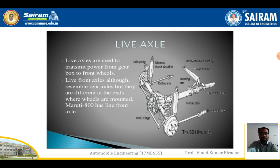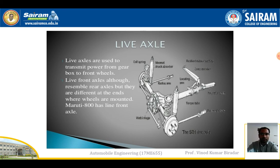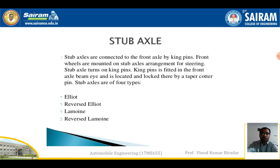Live axles are also a type of front axle. Live axles are used to transmit power from the gearbox to the front wheels. Normally the gearbox is fixed near the shaft at the back side of the wheel, from where power is transmitted. Live front axles resemble rear axles but are different at the ends where the wheels are mounted. They are normally found in Maruti and similar cars.